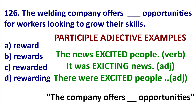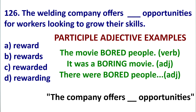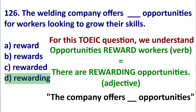Another example: the movie bored people, so it was a boring movie. -ING describes the subject — the cause — while -ED describes the object and how they feel. So if we think about 'reward': the opportunity rewards people, so the opportunity is the subject. Therefore, it is a 'rewarding' opportunity. The answer is D: rewarding.